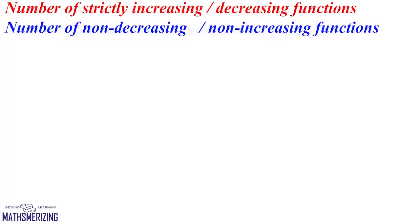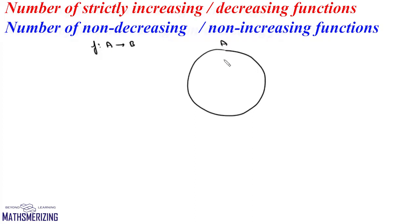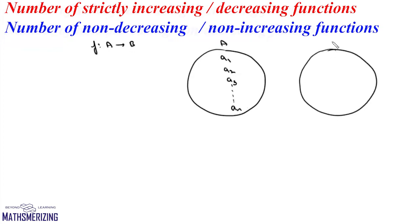Now we'll find the number of strictly increasing and strictly decreasing functions defined from set A to set B. We have function F defined from set A to set B. Suppose set A has N elements: A1, A2, A3, ..., AN, and set B has M elements: B1, B2, ..., BM. So the number of elements in set A is N and in set B is M.